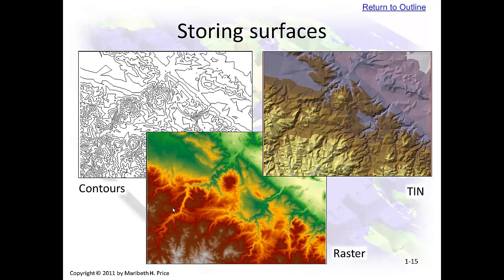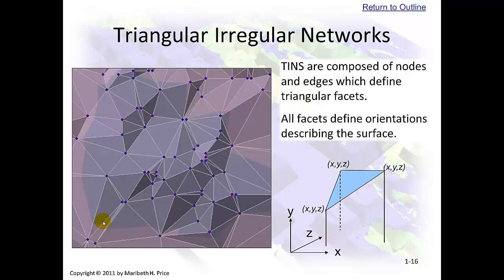Storing surfaces. This image shows contours — you've seen contour maps before. This is a TIN, triangular irregular network. And this is a raster. All of these depict the same area — you can see the peak here, here, and here — but there are different ways of storing and displaying them. We don't use TINs in this course, but it's good to know what they are.